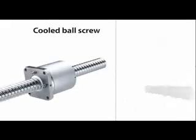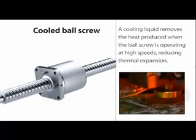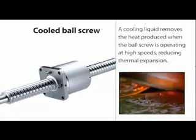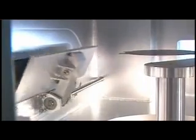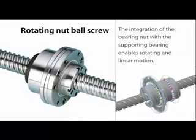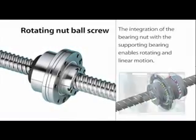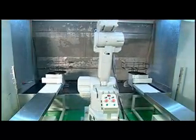Cooled ball screws: a cooling liquid is forced through the center of the nut, removing the heat produced when the ball screw operates at high speeds and reducing thermal expansion. This enables the ball screw to maintain high accuracy at high speeds; they are used in high speed machine tools and high speed general processing center machines. Rotating nut ball screws integrate the bearing nut with a supporting bearing, enabling both rotating and linear motion. These are used in semiconductor machinery, industrial robots, woodworking machines, laser processing machines, and conveyor devices.